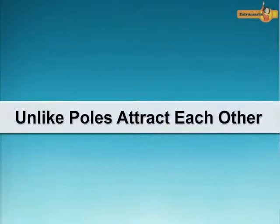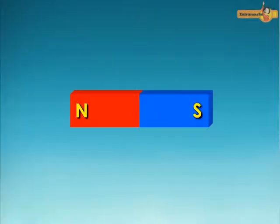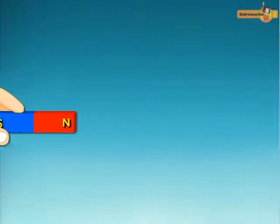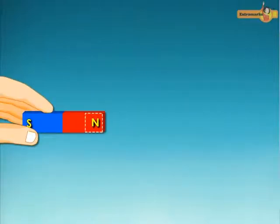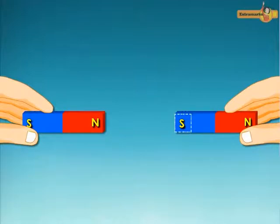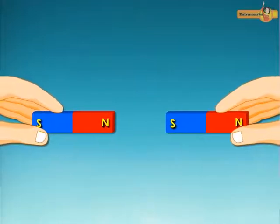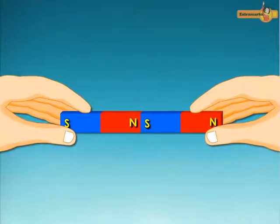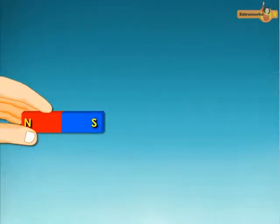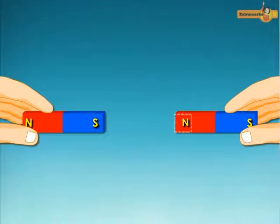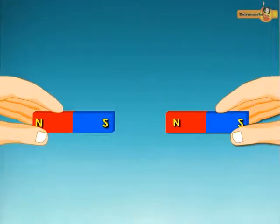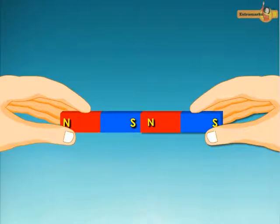Unlike poles attract each other. A magnet has two poles: north pole and south pole. If we bring the north pole of one magnet close to the south pole of another magnet, then the two poles attract each other. Similarly, if we bring the south pole of one magnet close to the north pole of another magnet, then again the two opposite poles attract each other.